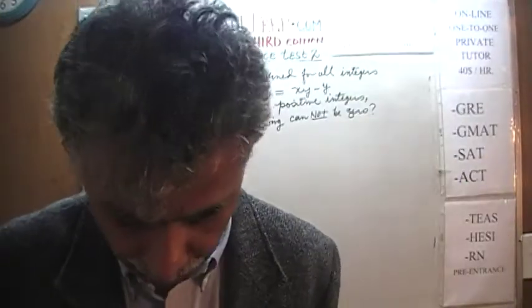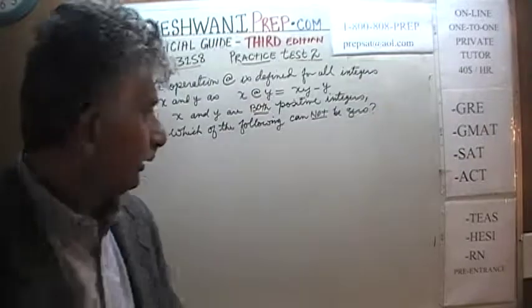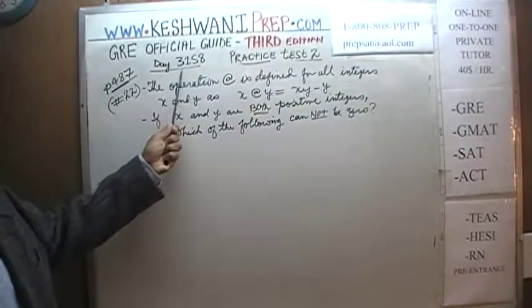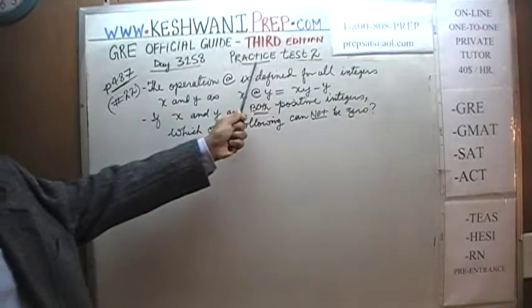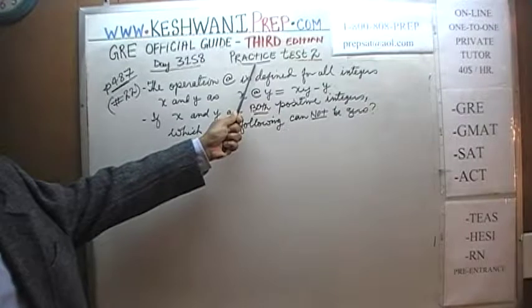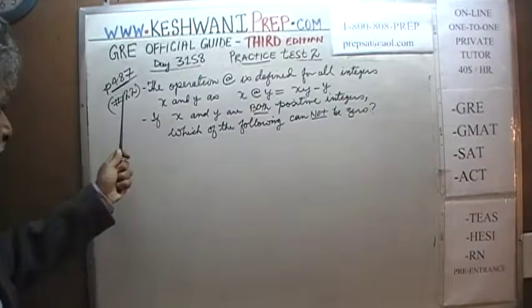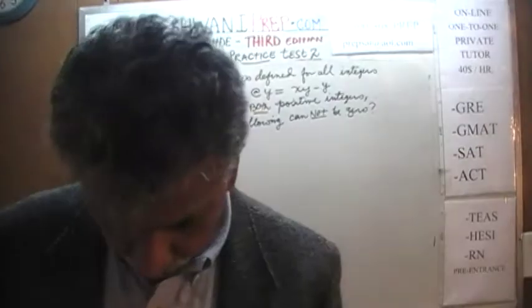Today is our lesson number 158 — day 3158. The 3 signifies that we are in the third edition: third edition, day 158. We are in the process of solving problems from the practice test at the end of the book. We are on the second practice test, page number 487, problem number 22. Make sure the book is in front of you, turn to page 487, and read problem number 22.